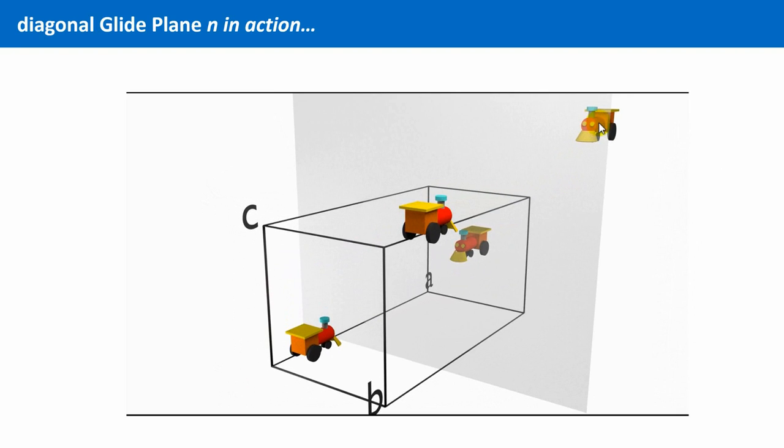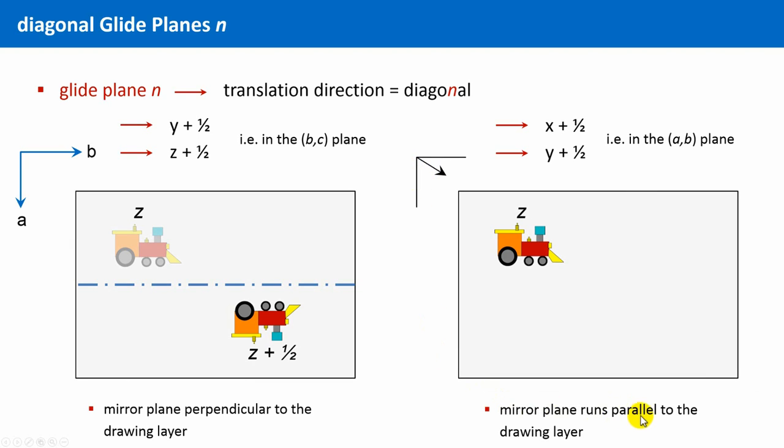In the second scenario, the mirror plane is oriented parallel to the drawing layer. This is indicated again with such a symbol which indicates the plane and the translation direction is indicated as well, a diagonal movement in the a-b plane. First we carry out the reflection at this gray drawing layer. This means the z-coordinate is inverted. The locomotive lies now behind this plane. And then the translation component is diagonal in the a-b plane, meaning the x- and y-coordinate increase by one half simultaneously.